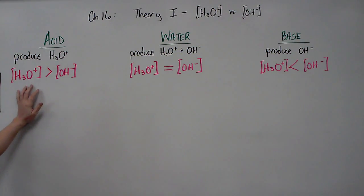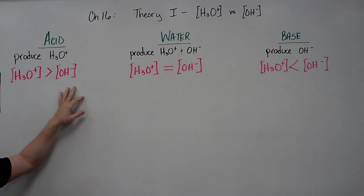An acid produces hydronium when placed in solution, and therefore hydronium ions would be greater than the amount of hydroxide ions.